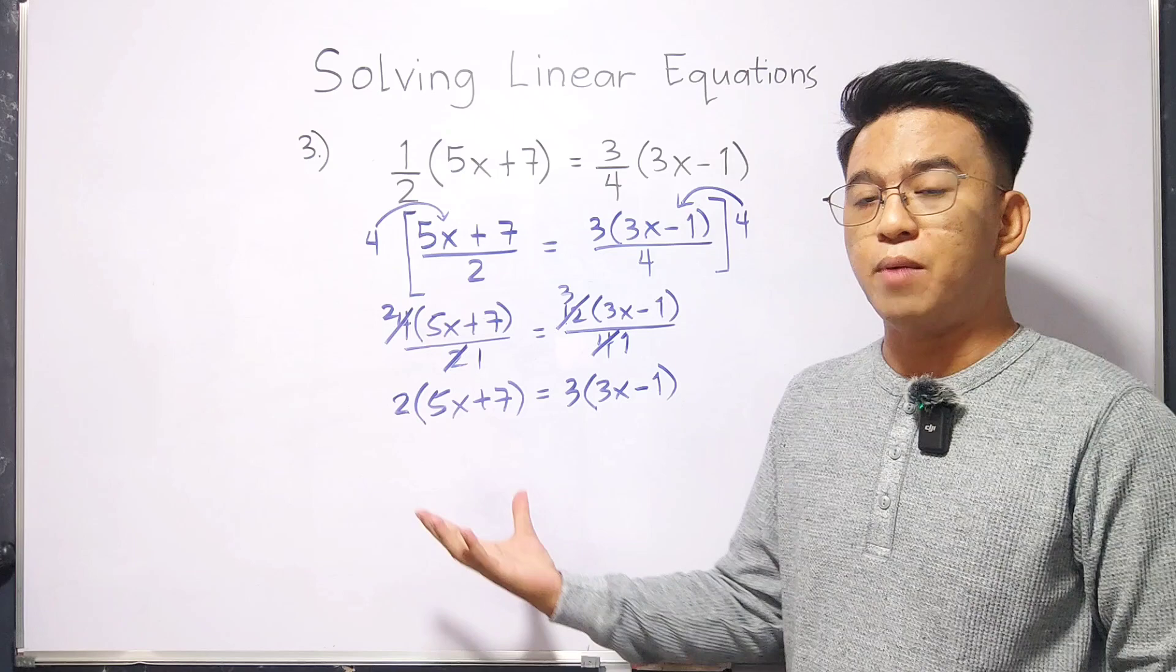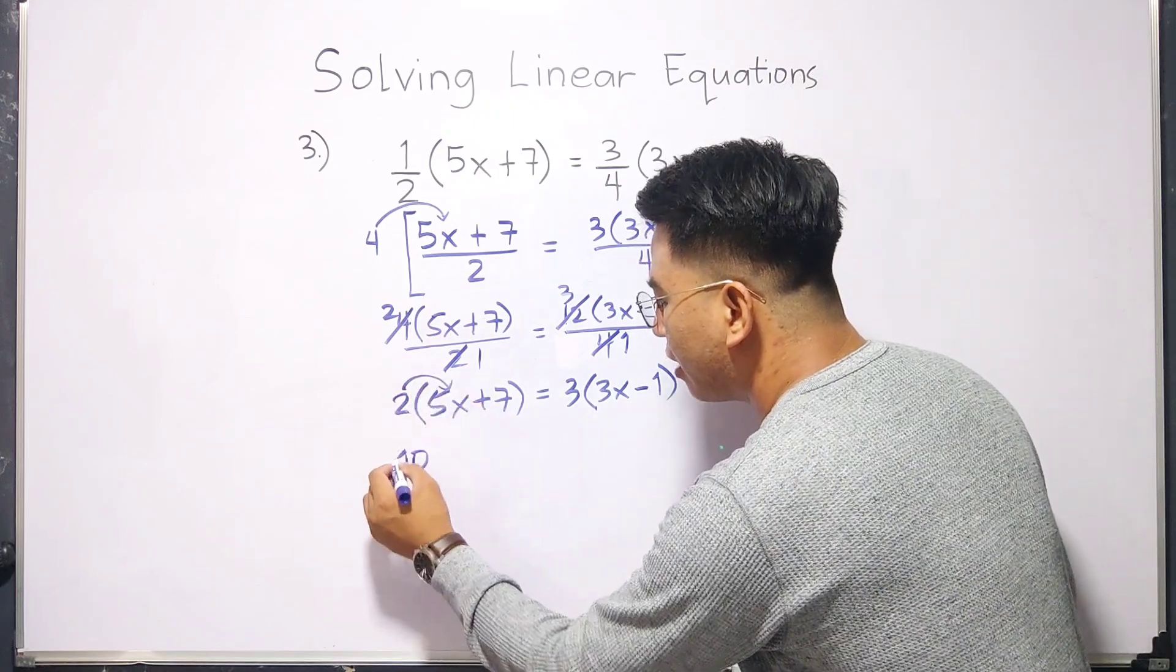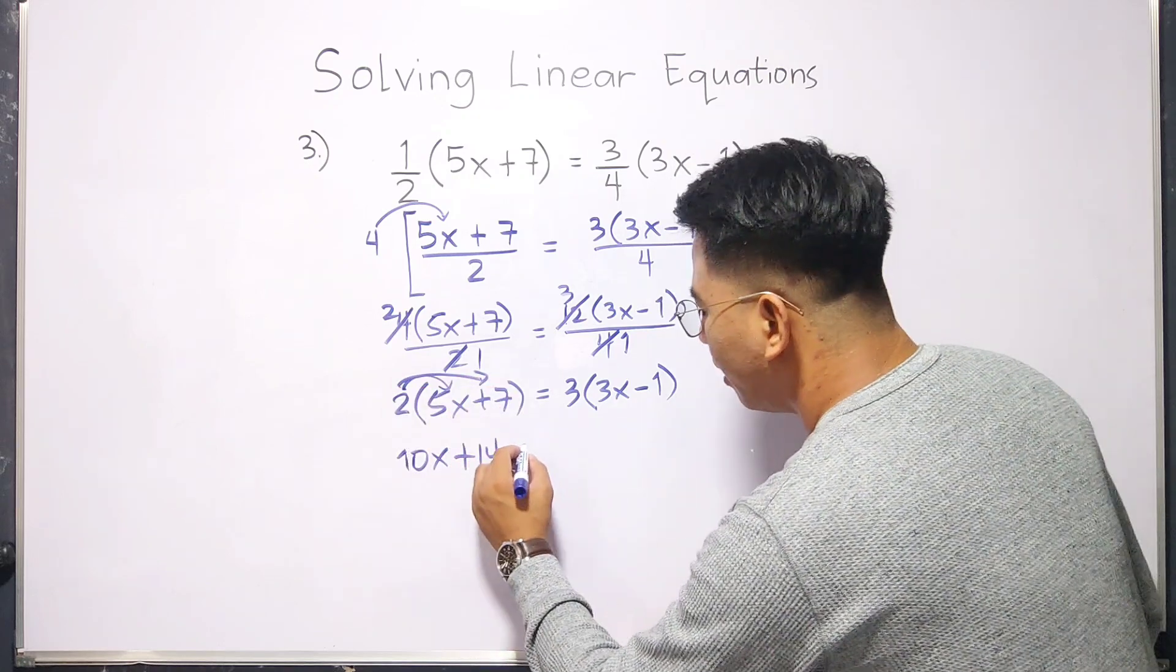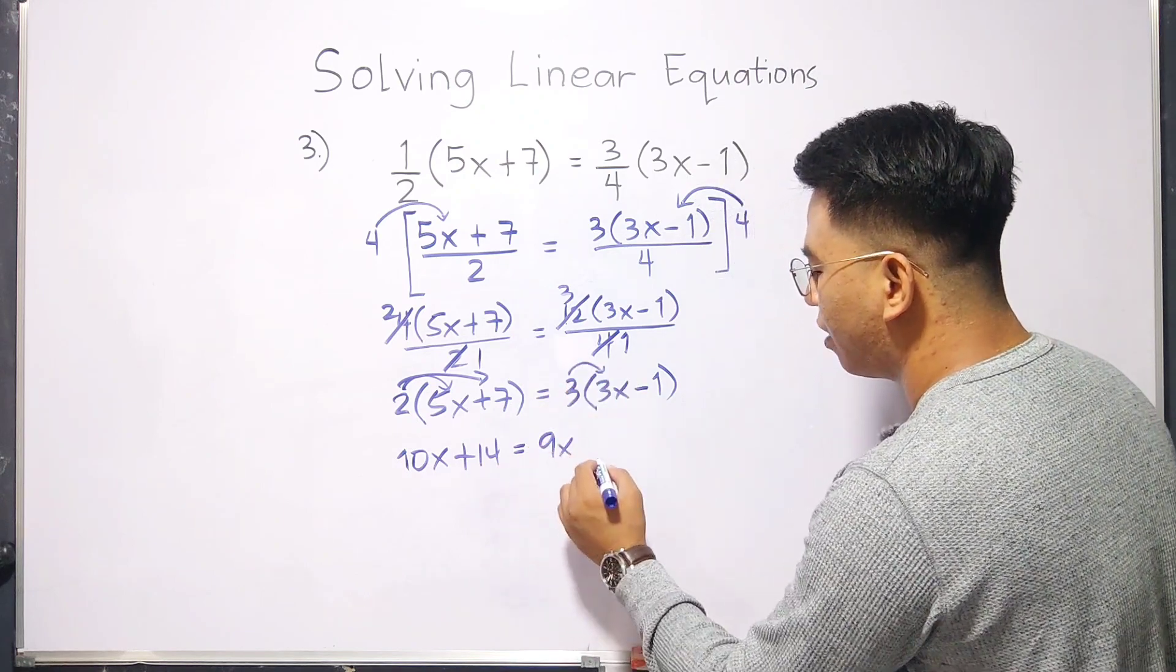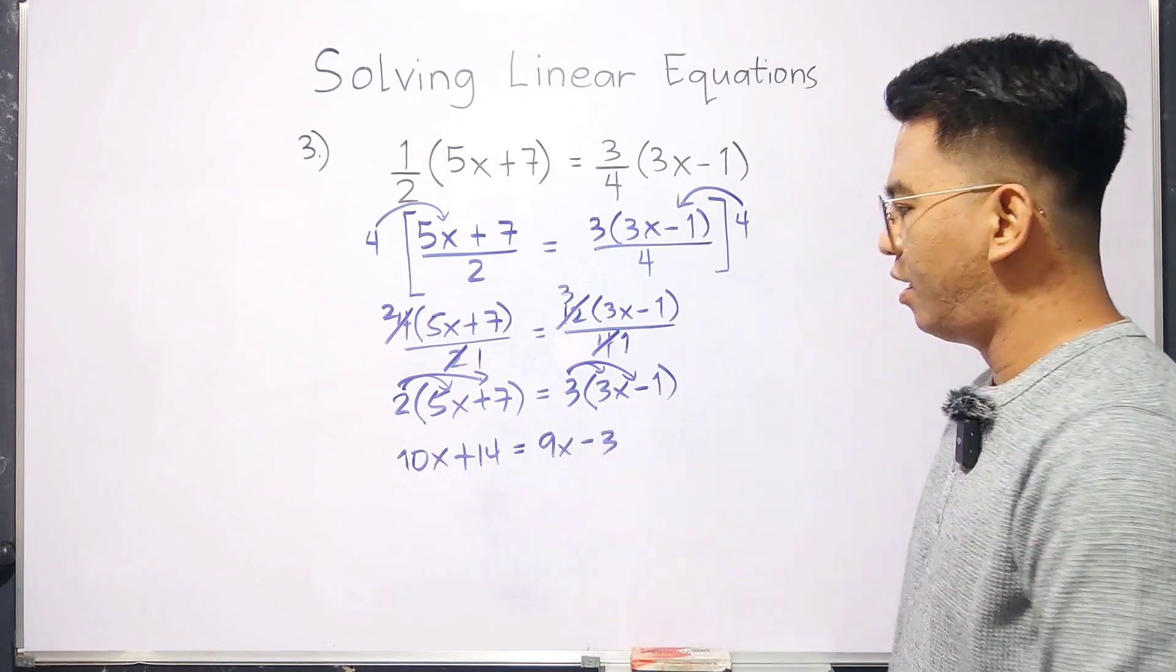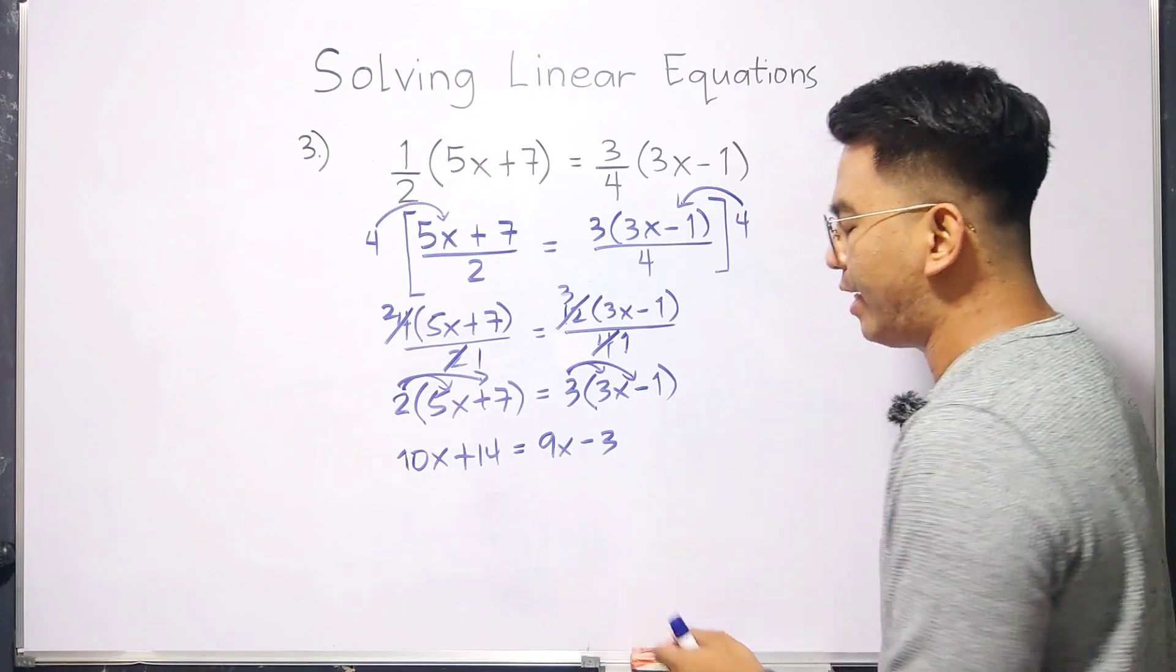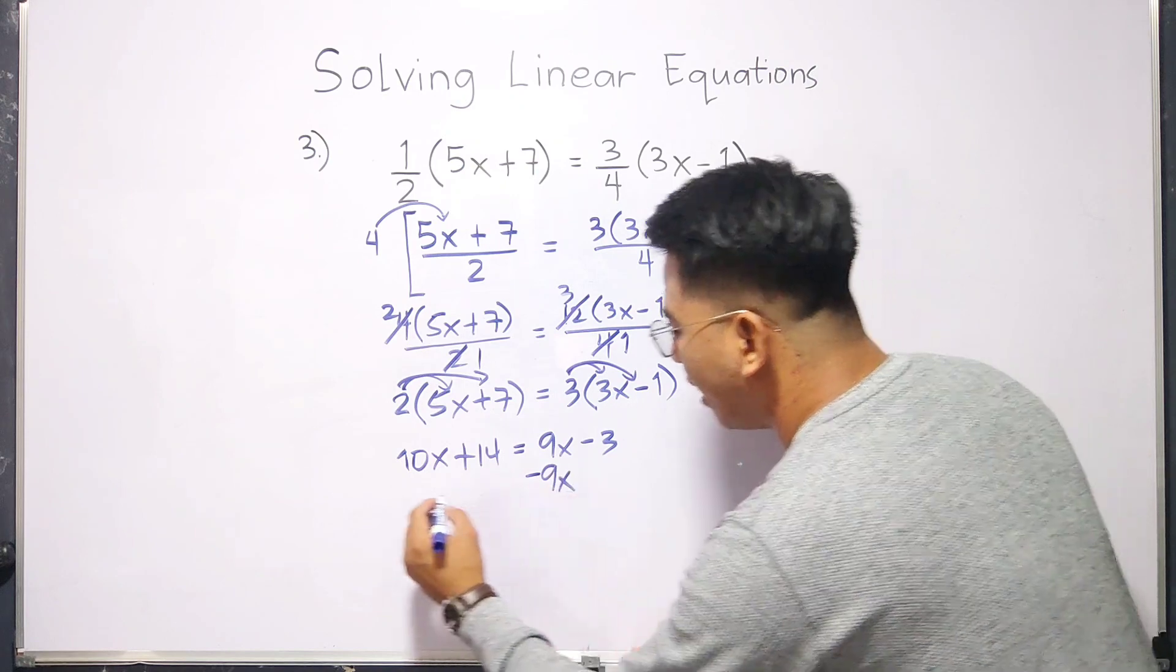Now, we can use the distributive property. This is 10x plus 14. And this is 9x minus 3. And what we need to do is to combine like terms. We need to eliminate 9x by subtracting both sides by 9x.